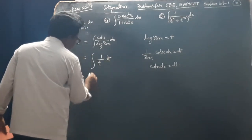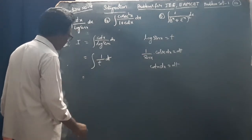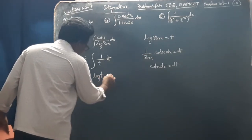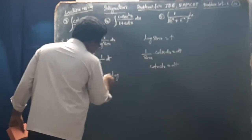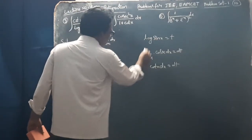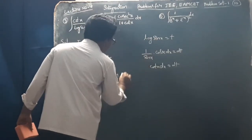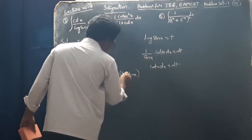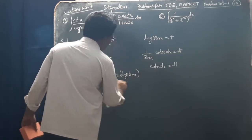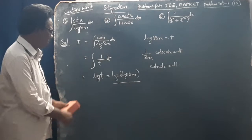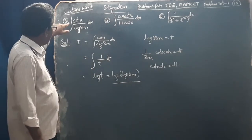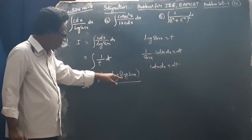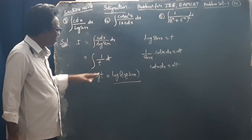This is equal to integral of 1 by t dt, which equals log t. Substituting back, log t equals log of log sin x. This is the required answer. So, integral of cot x by log sin x equals log of log sin x.